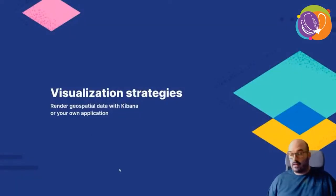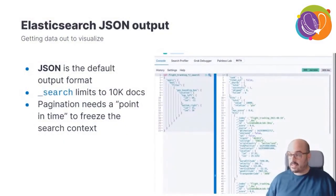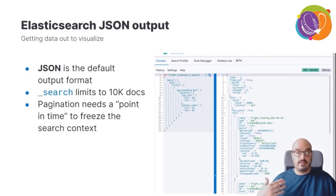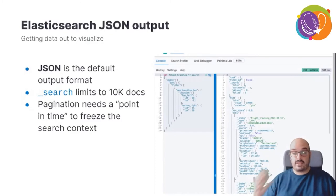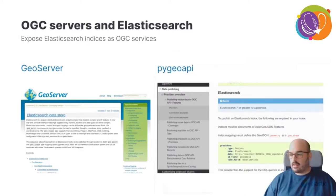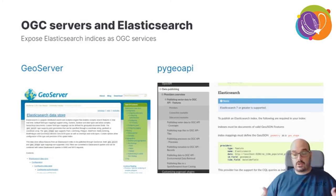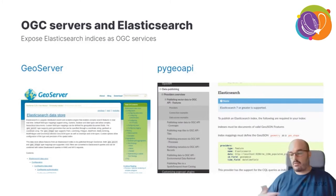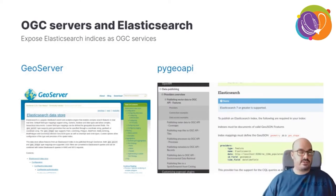Elasticsearch always outputs data in JSON form, meaning you can only retrieve up to 10,000 documents in a single search query. In real-time scenarios where new data is constantly arriving, you need to freeze the search context to retrieve documents consistently. There are open-source projects that interact with Elasticsearch: GeoServer and pygeoapi both expose data as OGC services, querying aggregations or raw data and converting JSON output into OGC-compliant responses like WMS images, WFS GeoJSON, or OGC API Features endpoints.